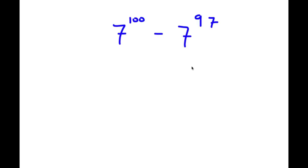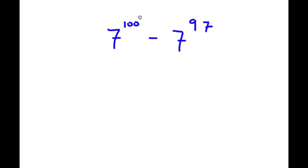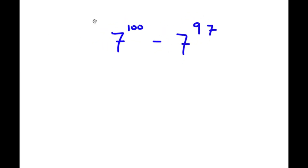In this problem, I have 7 to the power of 100 minus 7 to the power of 97. To solve this, I'm going to first rewrite 100 as 97 plus 3.